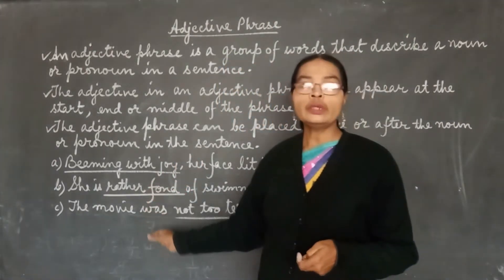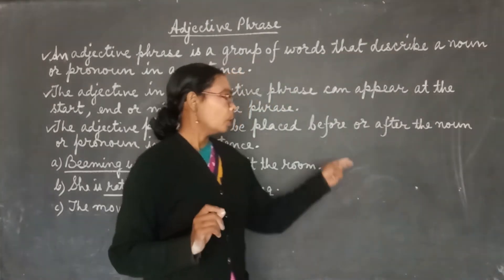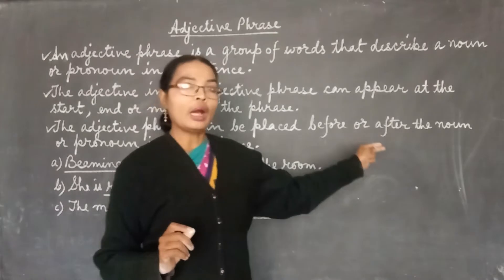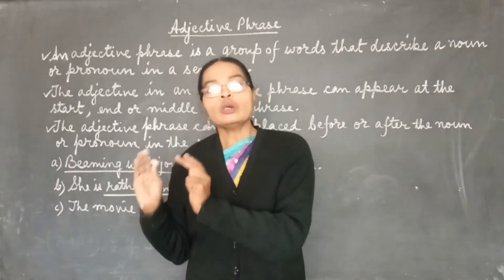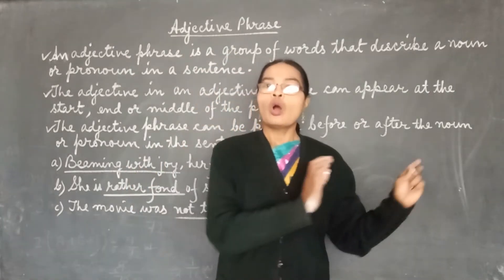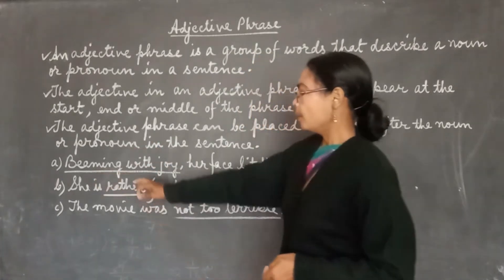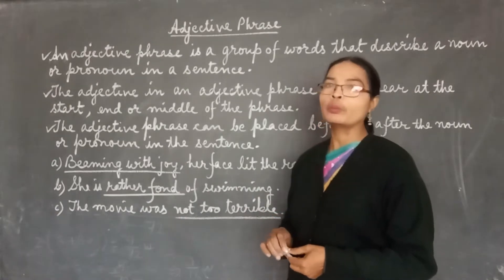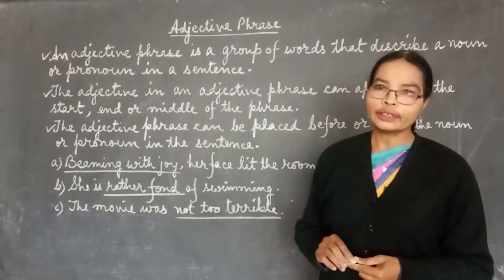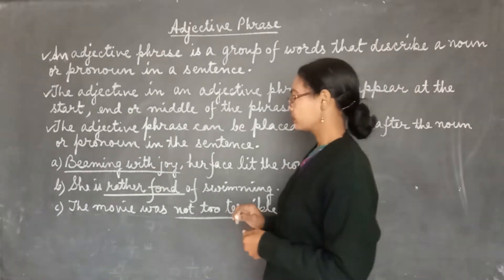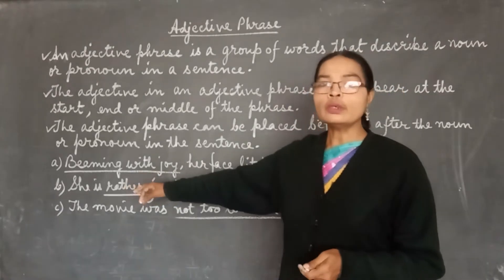Let's see some sentences to check whether the adjective phrase can be placed before or after the noun or pronoun. Come to sentence A: 'Beaming with joy, her face lit up the room.' In this sentence, 'beaming with joy' is our adjective phrase, and it is placed at the beginning of the sentence.